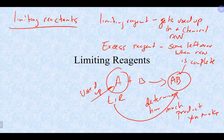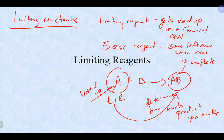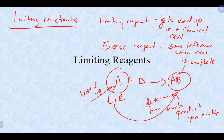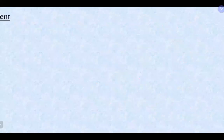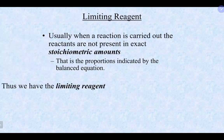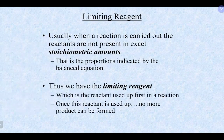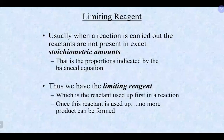In a limiting reagent problem, there is always an extra step you have to take in the calculation to figure out which one is the limiting reagent, because that determines how much product you will make. Reagents are not used up equally — there's always one that gets used up and one you have leftover.